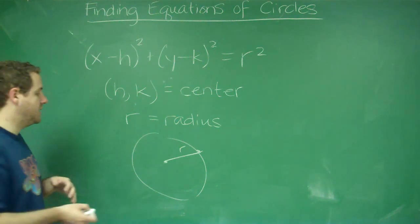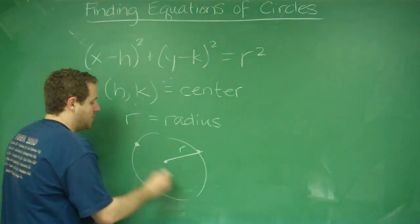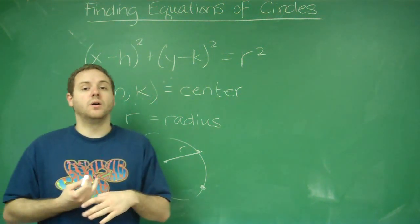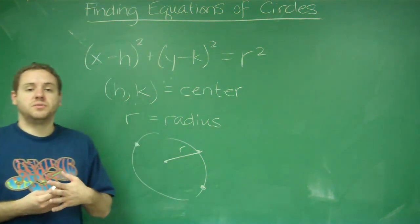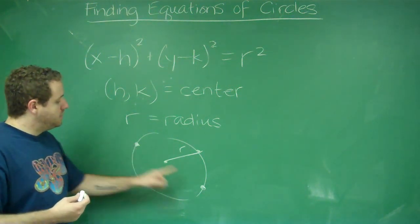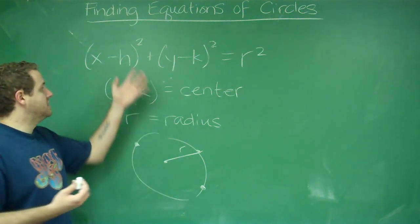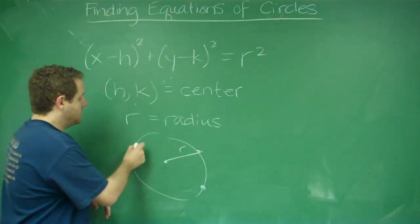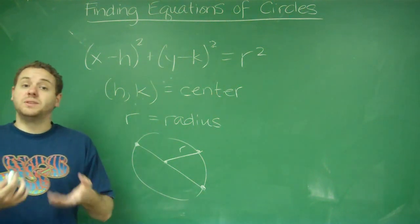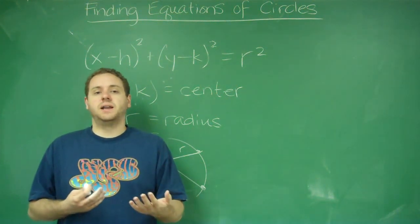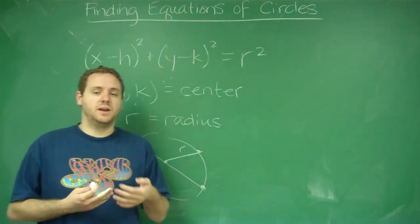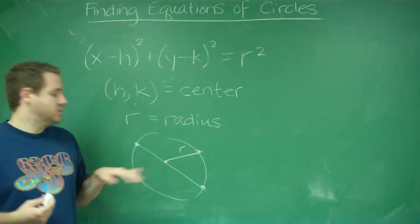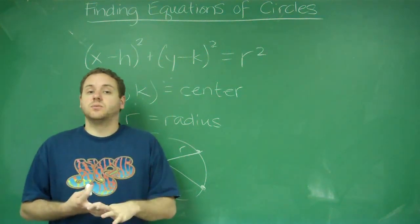Another type in which you could be given is that you could be given endpoints of a diameter on the circle, and that's all you're given. Well, again, you could do a couple different things. To get the center, you could do the midpoint between those two points. You would get the center and be able to put that in your formula. And then, you could either do the distance all the way across by doing the distance formula and then just dividing it in two to get the radius. Or, once you've done the midpoint and got the center, you could just do the distance from the center to either of these points and you would get the radius.